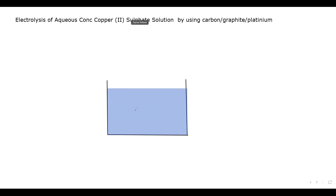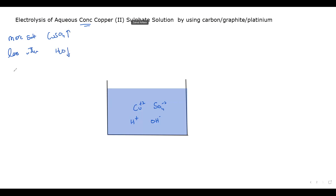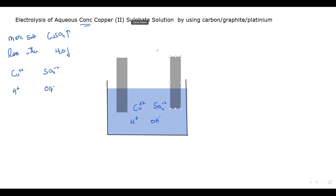The electrolyte is blue in color because of the copper ions — copper ions are blue in color. Copper sulfate dissociates into Cu²⁺ and SO₄²⁻. Because it is aqueous, there will also be hydrogen ions and hydroxide ions. Since it is concentrated, it will have more copper sulfate and less water. So the ions present are: copper ion, sulfate ion, hydrogen ion, and hydroxide ion.